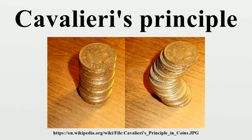Spheres: If one knows that the volume of a cone is (1/3)πr²h, then one can use Cavalieri's principle to derive the fact that the volume of a sphere is (4/3)πr³, where r is the radius.